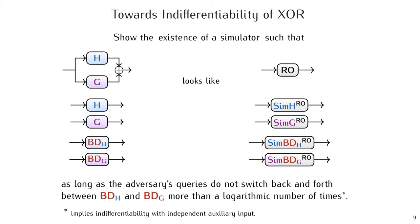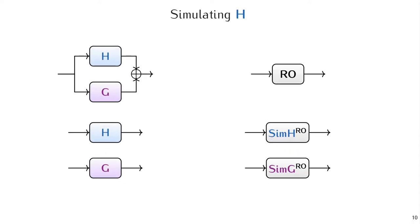Okay, now let's look at the proof of indifferentiability of XOR with bounded adaptivity and see what our simulator looks like. Let's start simple and consider simulating H for now, without the backdoor oracle. Simulating G is analogous.